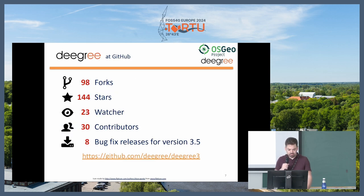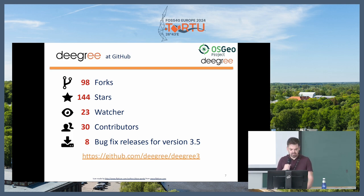Here are just some numbers: we have many contributors, many forks, many stars and watchers, so it's quite an active project. There are already eight bug fix releases for version 3.5, which is quite new, and we try to release as often as possible.